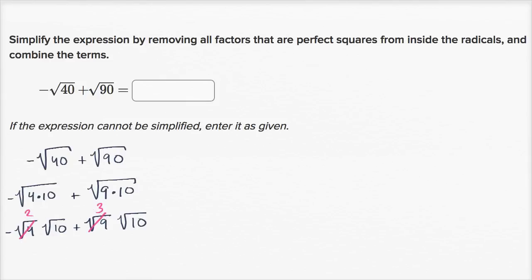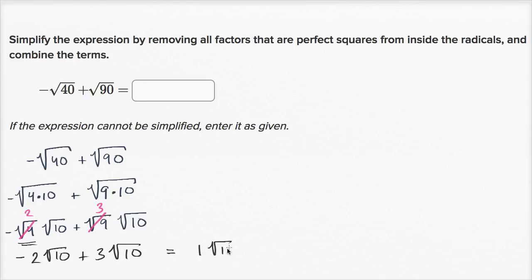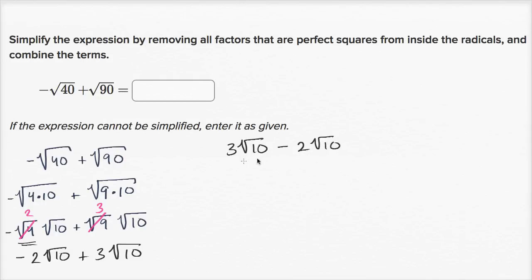So it's going to be equal to negative two square roots of 10 plus three square roots of 10. If I have negative two of something and I add three of that same something, that's going to be one square root of 10. If I have three of something and take away two of that something — in this case square roots of 10 — I'm going to be left with just one square root of 10.